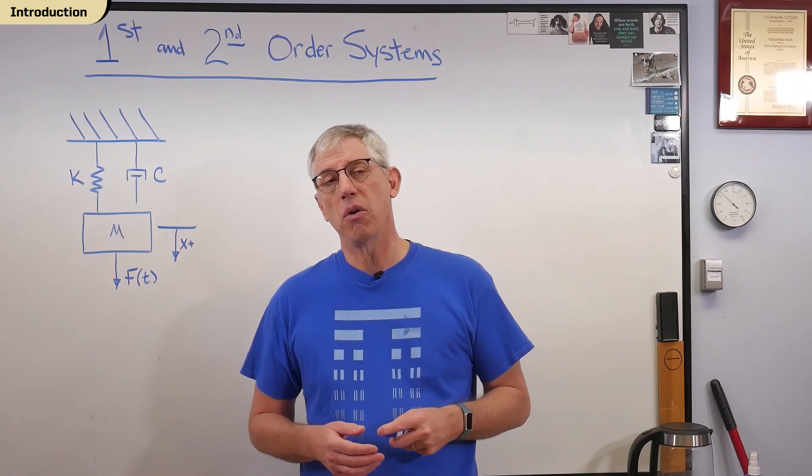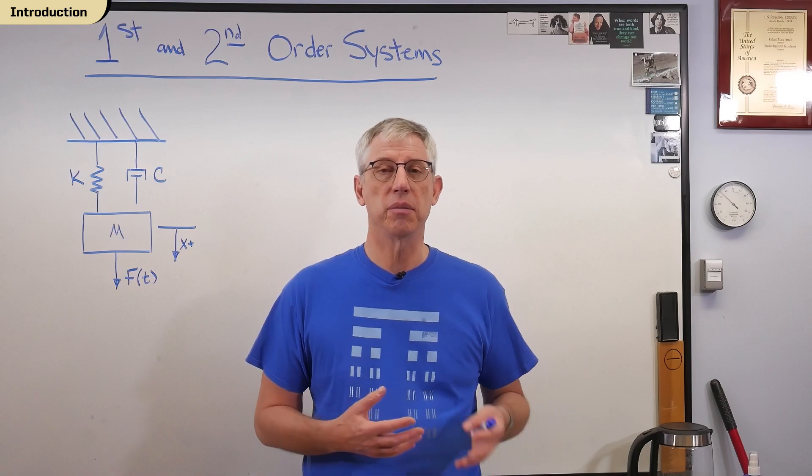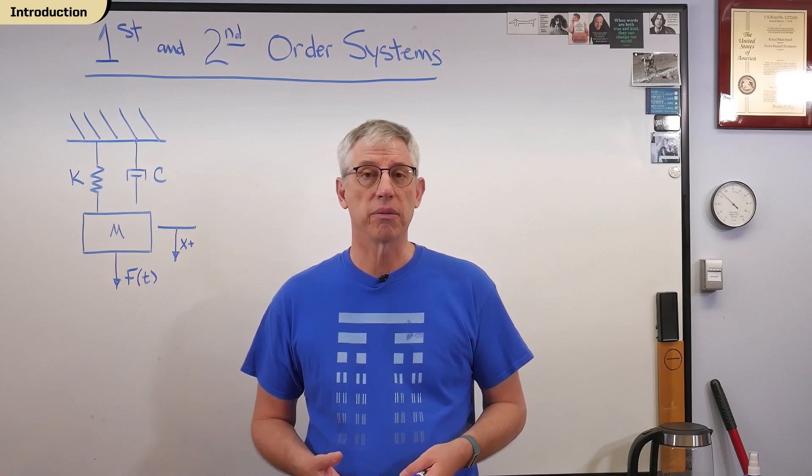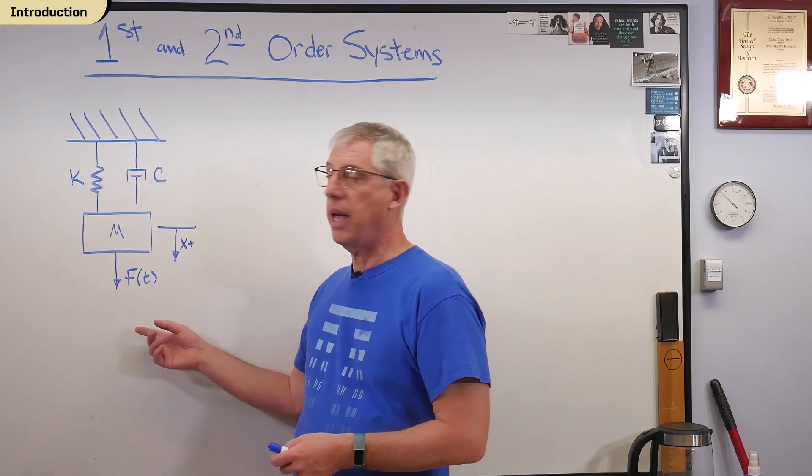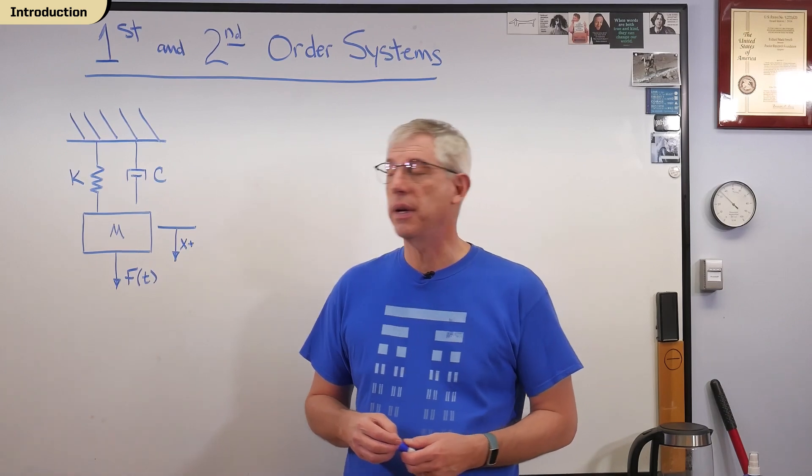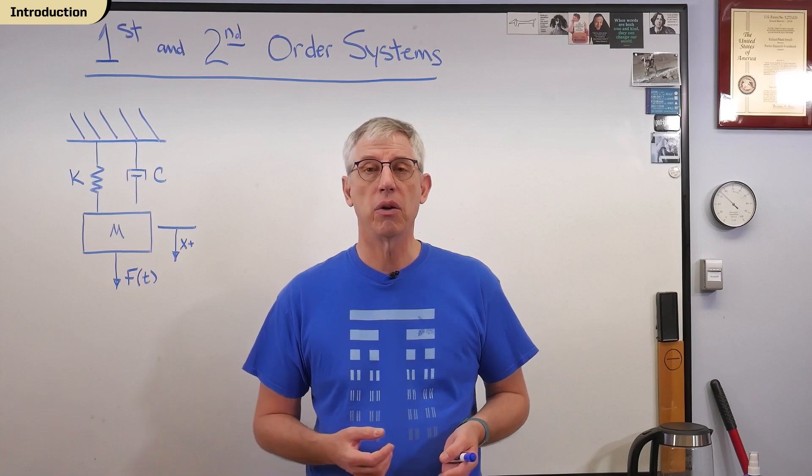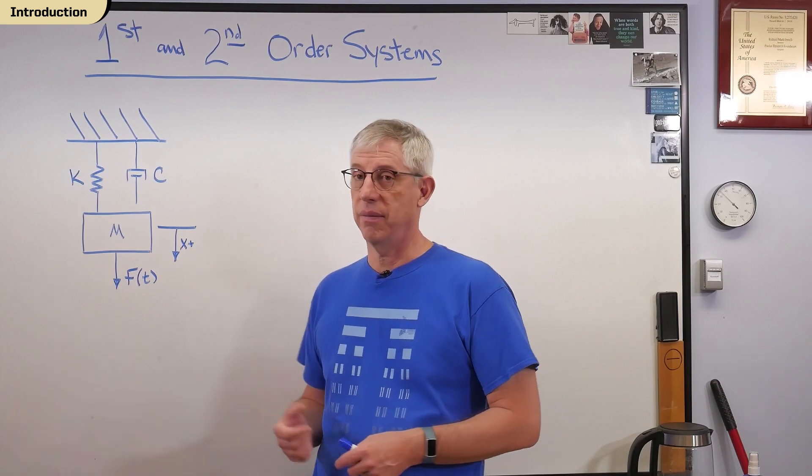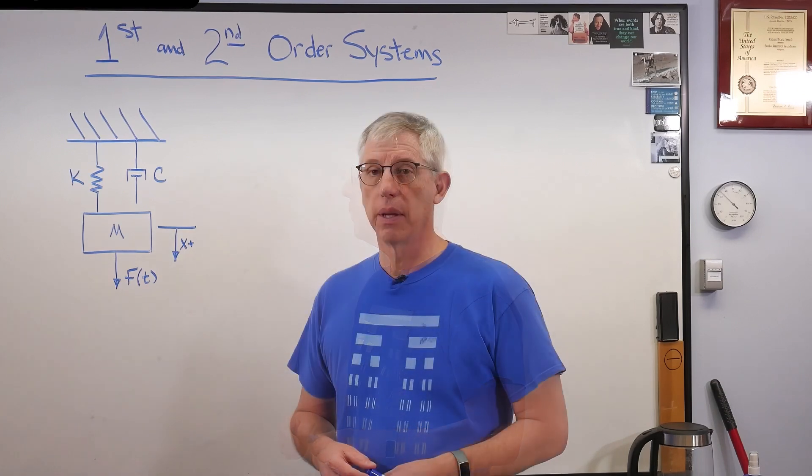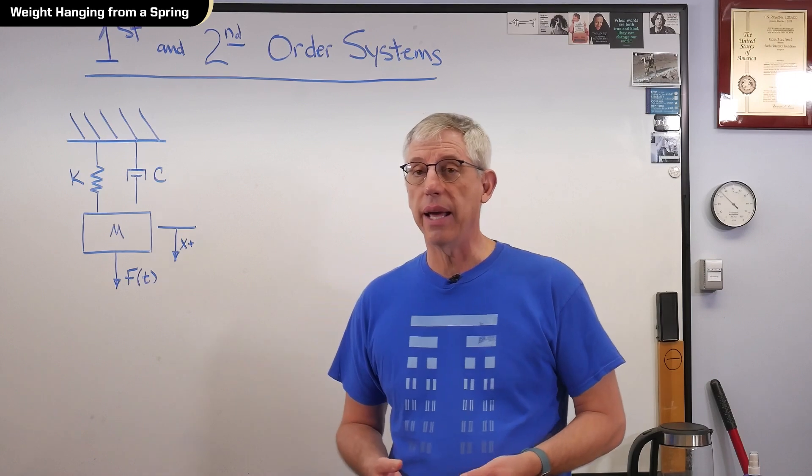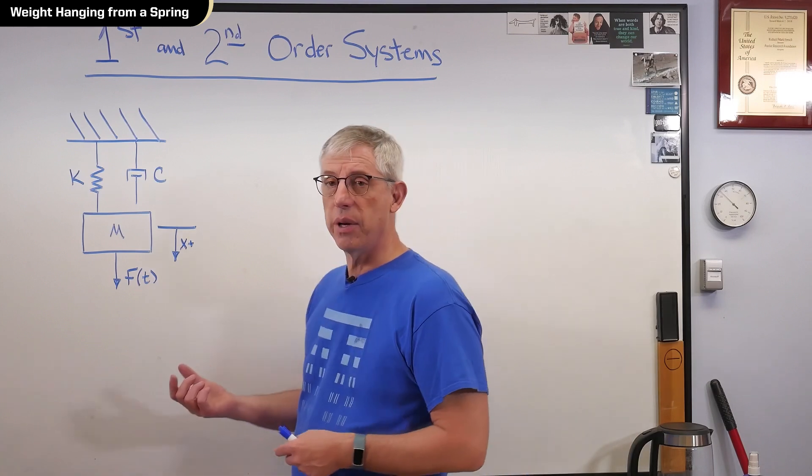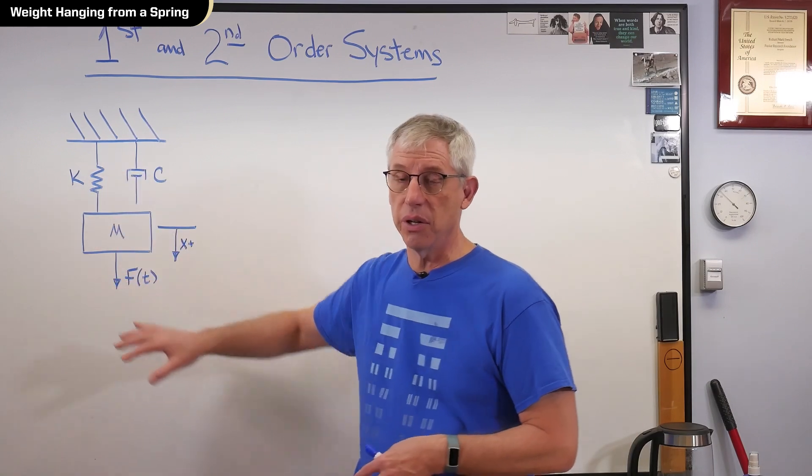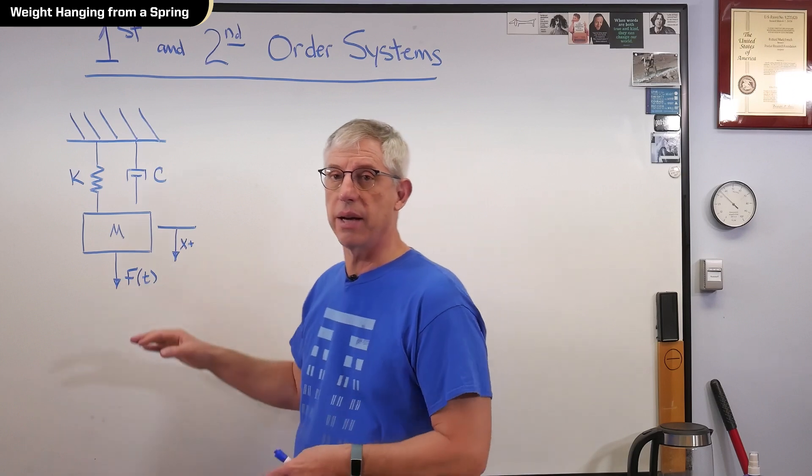Now, I can't go over every physical system that will give you a first or second order linear differential equation, so I'm going to pick one. This is a mechanical one you see in textbooks all the time. And in my career working in noise and vibration, I've seen this almost daily. So this is basically a weight hanging from a spring with a damper or shock absorber on it. And this is how we draw it. Now this isn't what the system is going to look like, but this is what it acts like.